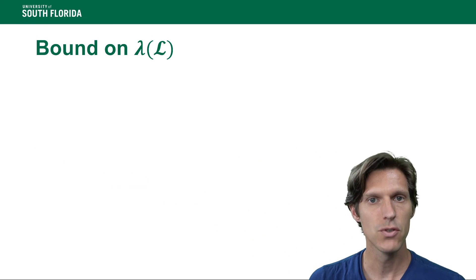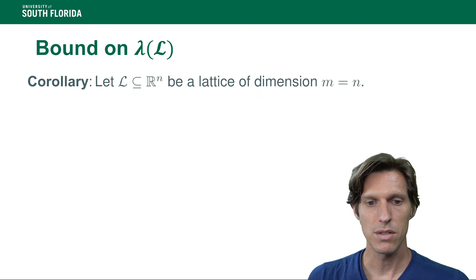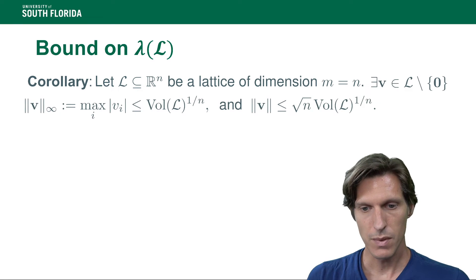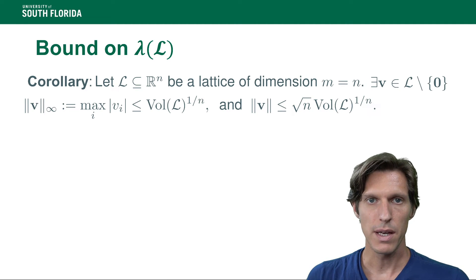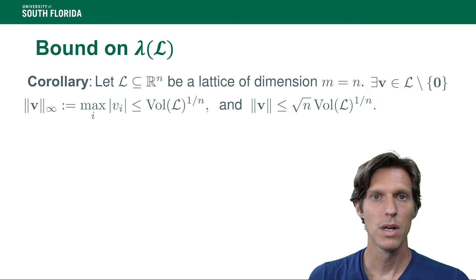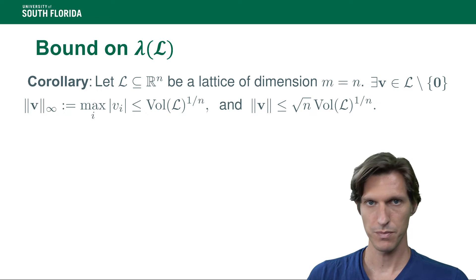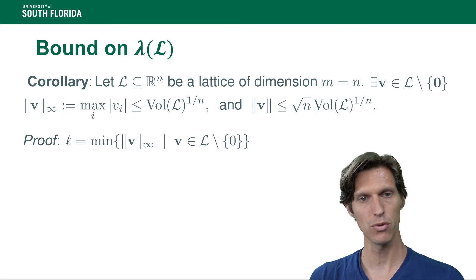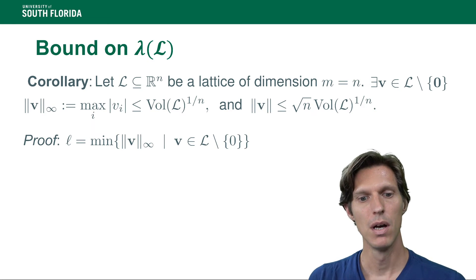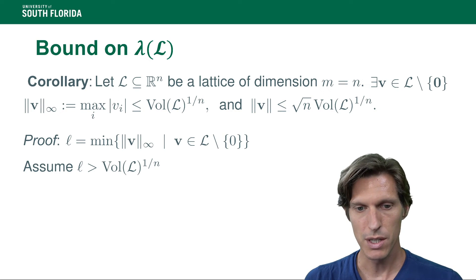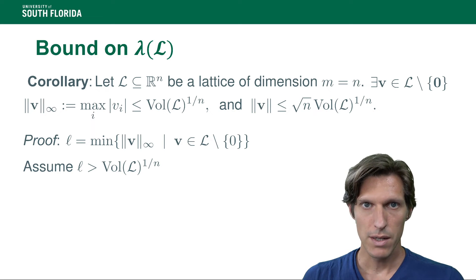How do we get from that to a bound on lambda of L, the minimum distance of the lattice? Assume that we have a lattice of R^n of dimension n. We get that the infinity norm — defined as the maximum of the absolute values of the n entries of v — is less than the volume to the power 1 over n. The direct consequence is that the Euclidean norm, which is the square root of the sum of the v_i squared, is less than square root of n times the volume to the 1 over n. For the proof, we take L to be the minimum of the infinity norms for v over non-zero lattice points and assume by way of contradiction that L is strictly greater than the volume of the lattice to the power 1 over n.